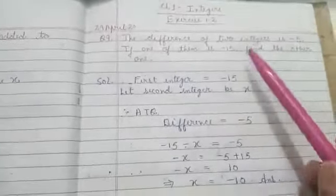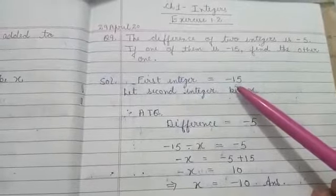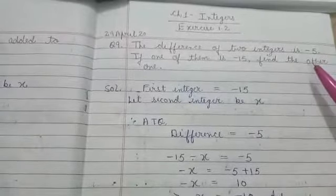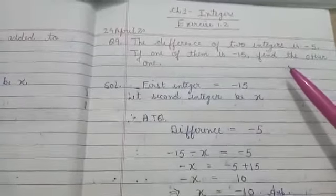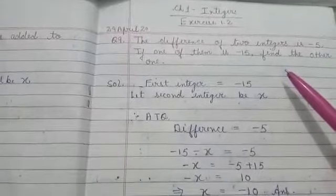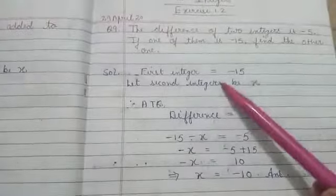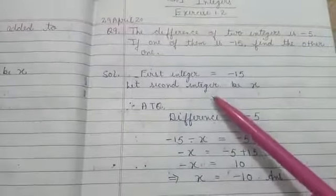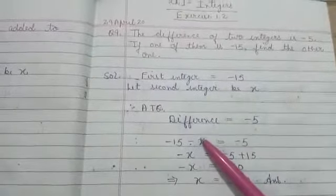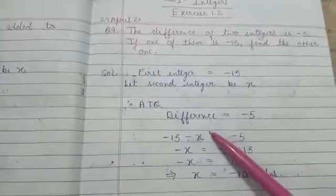So read the question first. The question is: the difference of two integers is minus 5. If one of them is minus 15, find the other one. So here one integer is given to you and the second integer you have to find, and the difference is given minus 5. So let us write: first integer equals to minus 15. Let the second integer be x. According to the question, what is given? The difference equals to minus 5.